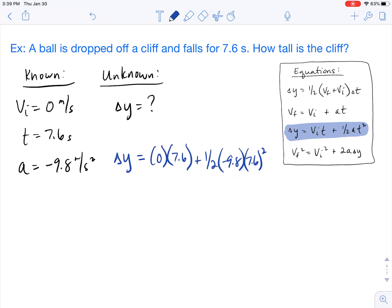And at this point we just have to simplify. So delta y is going to equal, well, zero times 7.6 is zero. One-half times negative 9.8 times 7.6 squared turns out to be negative 283.